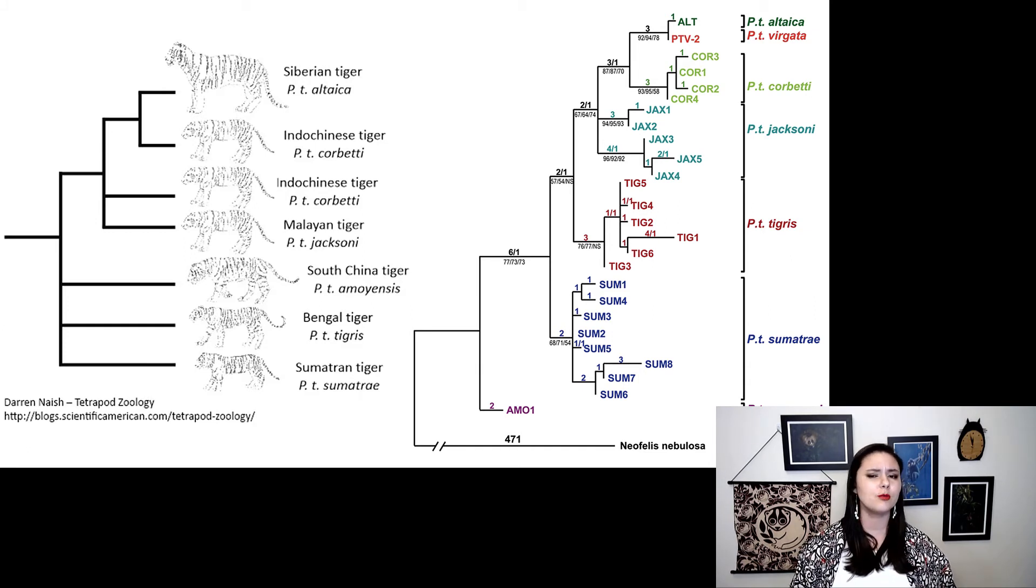You'll notice that we don't have multiple individuals for all subspecies here. But you'll see that all tigress groups together, all Sumatran groups together, all jacksoni and all corbetti all group together. So if we expect subspecies to be real, this is what we expect to see. We would expect to see distinct groups. All individuals of one subspecies are more closely related to each other than another group.